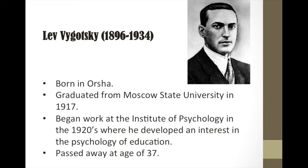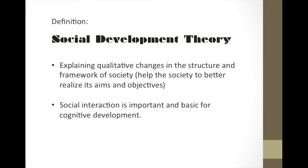Lev Vygotsky is a Russian psychologist who proposed social development theory. He was born in Osha and graduated from Moscow State University in 1917. He began work at the Institute of Psychology in the 1920s, where he developed an interest in the psychology of education. He passed away at the age of 37.